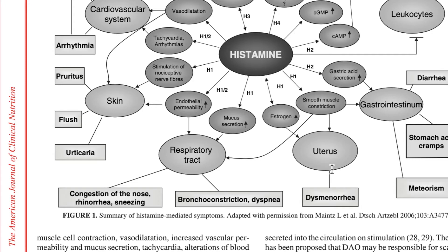Histamine also impacts the uterus — it contracts the uterus through smooth muscle constriction, causing dysmenorrhea, which is pain. We can see this smooth muscle constriction also affects the gut, which can cause abdominal cramping, stomach aches, and meteorism — basically swelling of the abdomen caused by a build-up of gas in the intestines.